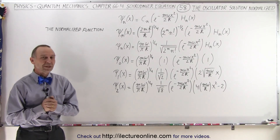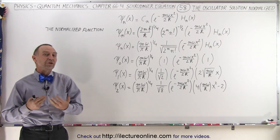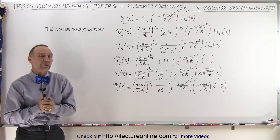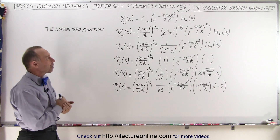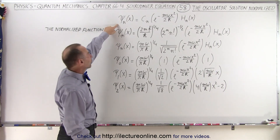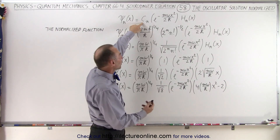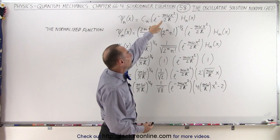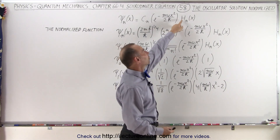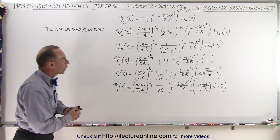Welcome to my lecture online. Before we show you how to normalize the function, let's show you what the general solution looks like for the quantum harmonic oscillator. The wave function is equal to some constant that needs to be normalized, times e to the minus m omega x squared over 2 h-bar, times the Hermitian operator for a particular quantum state.